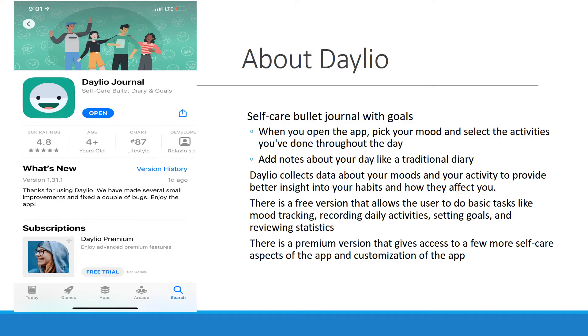The app, as shown on the left, is a type of internal journal. Whenever you open the app, you pick your mood in a couple different areas and select some activities and goals that you feel you need to improve on.